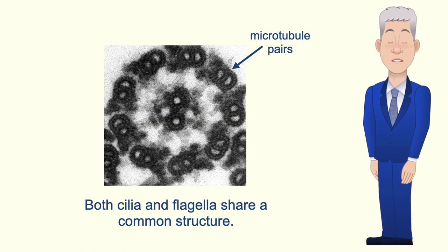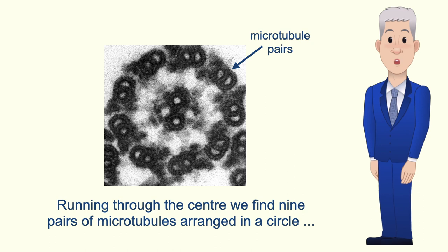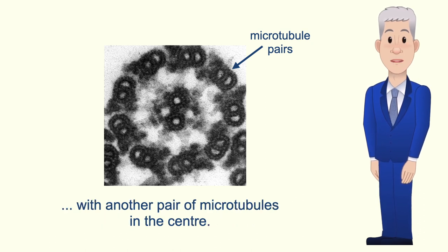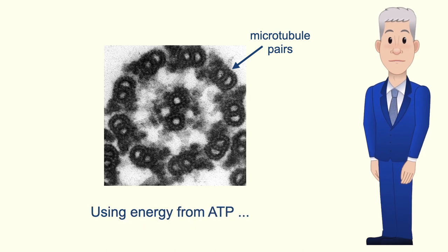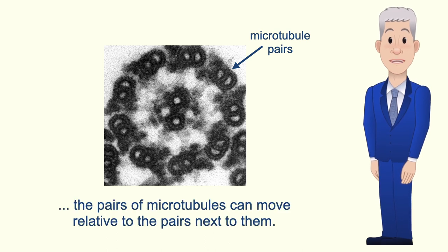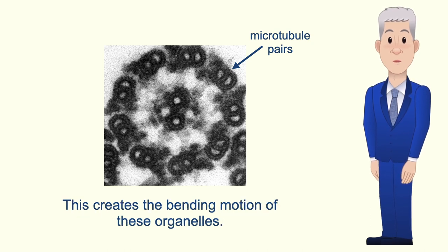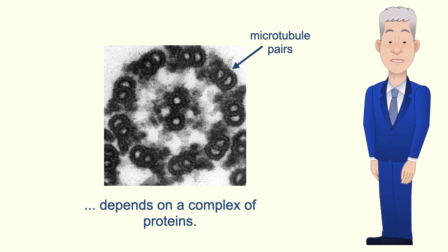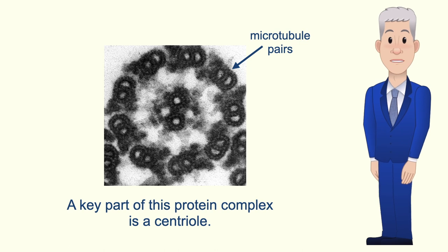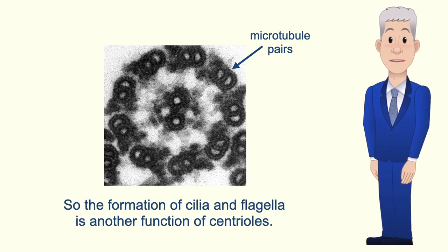Both cilia and flagella share a common structure. Running through the center we find nine pairs of microtubules arranged in a circle, with another pair of microtubules in the center — scientists call this the 9 plus 2 structure. Using energy from ATP, the pairs of microtubules can move relative to the pairs next to them, and this creates the bending motion of these organelles. Where a cilium or flagellum forms depends on a protein complex, and a key part of this protein complex is a centriole, so the formation of cilia and flagella is another function of centrioles.